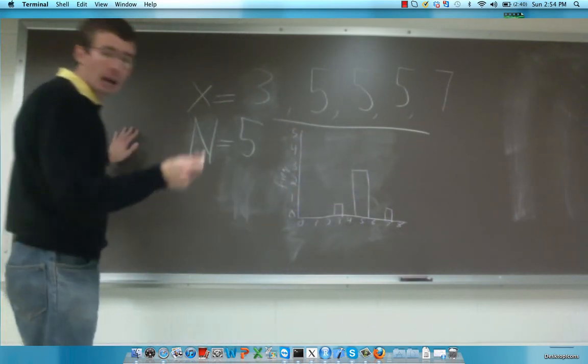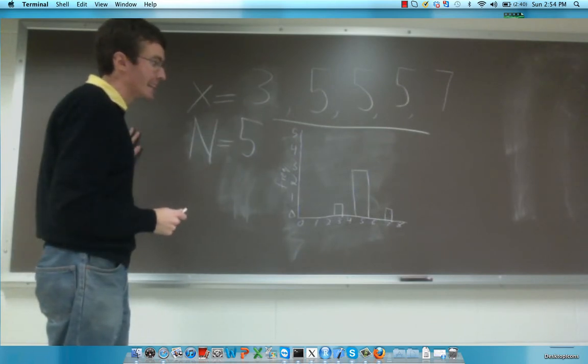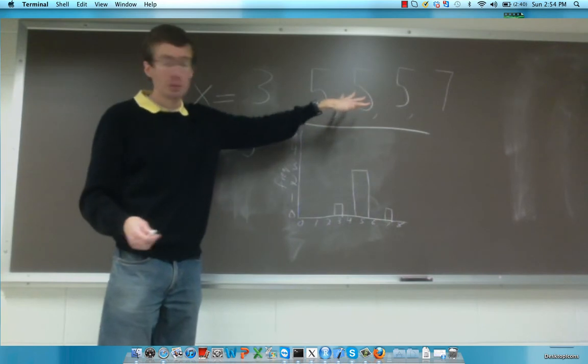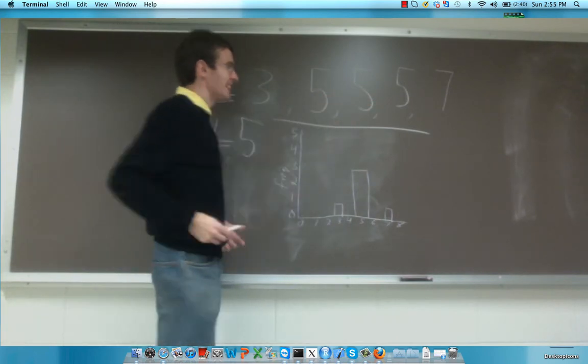To do that, one of the most popular measures of central tendency is something called the mean. The mean is simply the average of all these observations in our sample. So, 3, 5, 5, 5, and 7.